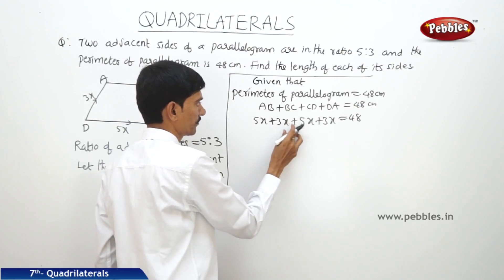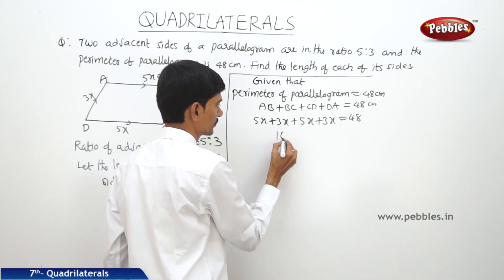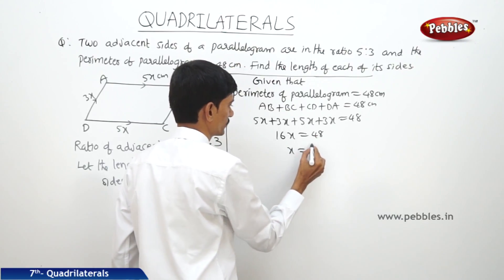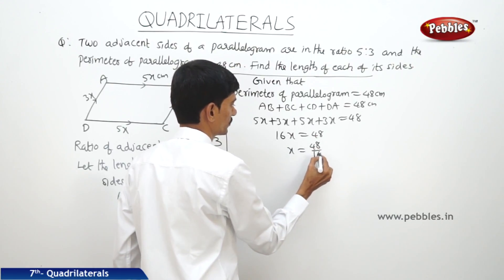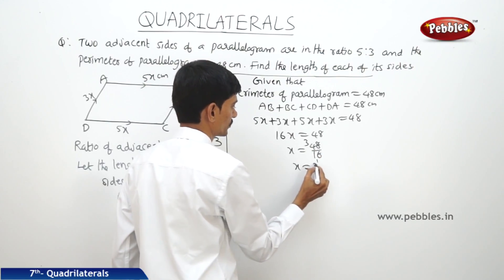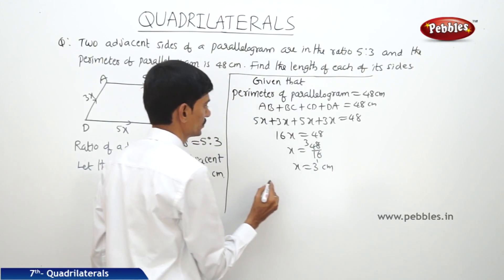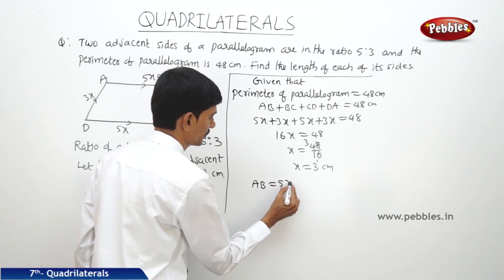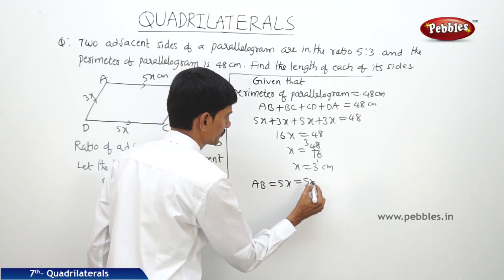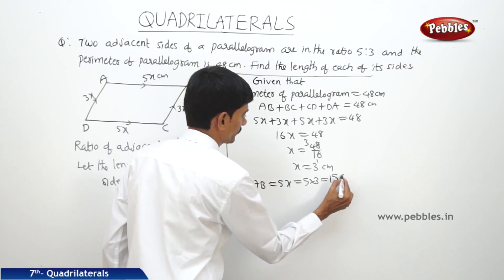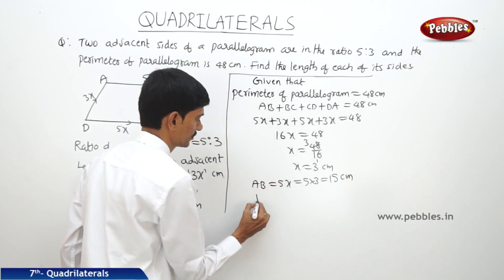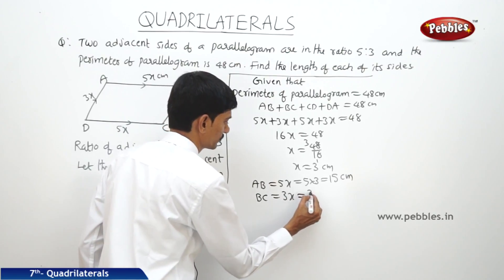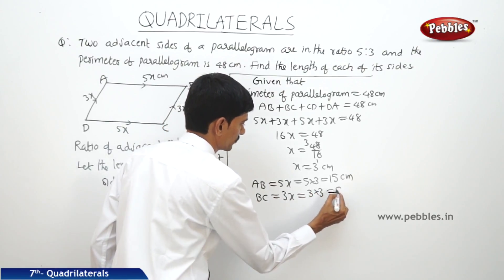So 5 plus 3 is 8, plus 5 is 13, plus 3 is 16x equals 48. Then x equals 48 divided by 16, so x equals 3 centimeters. Then AB equals 5x equals 5 into 3 equals 15 centimeters, and BC equals 3x equals 3 into 3 equals 9 centimeters.